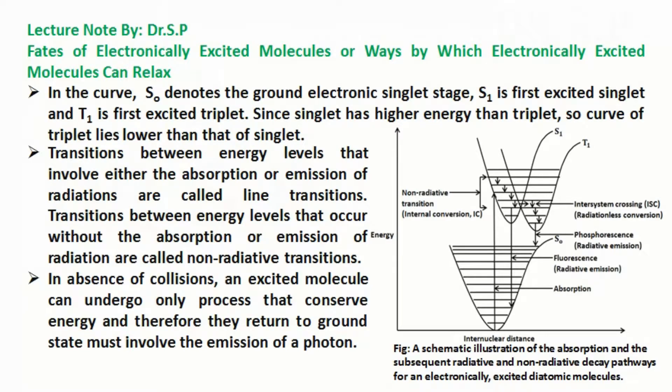Transitions between energy levels that involve either the absorption or emission of radiations are called line transitions. Transitions between energy levels that occur without the absorption or emission of radiation are called non-radiative transitions.